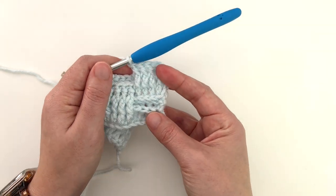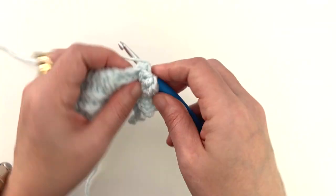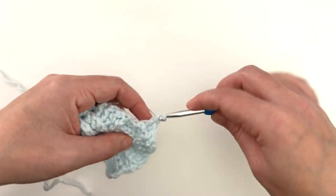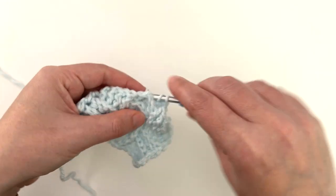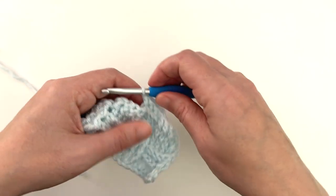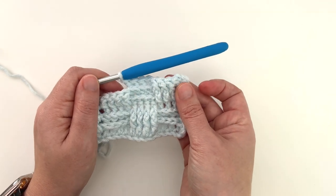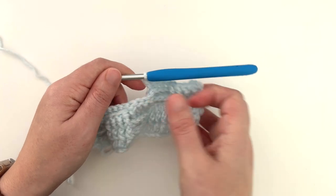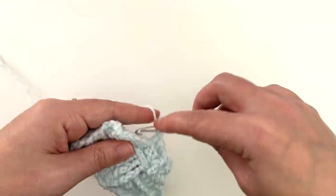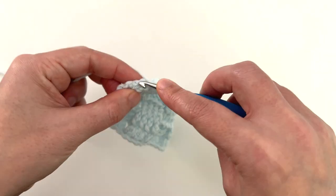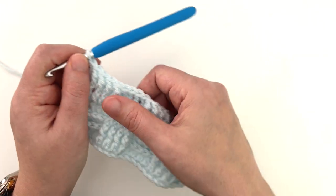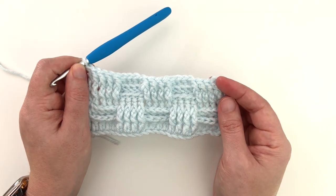There's the first four. And to the second. So again, we're going to repeat that all the way across, front back front, to the end. And double crochet into the turning chain.